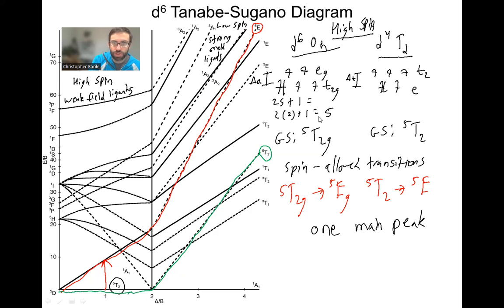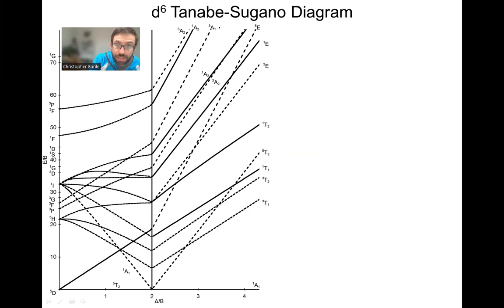Let's switch over now and do the low spin side of the diagram. Everything we're going to be talking about is going to be low spin. It's going to be applicable to the D6 octahedral complexes or the D10 minus 6, the D4 tetrahedral complexes.